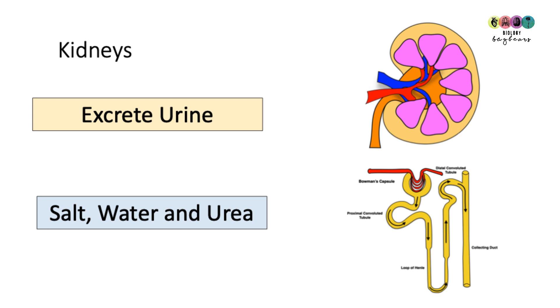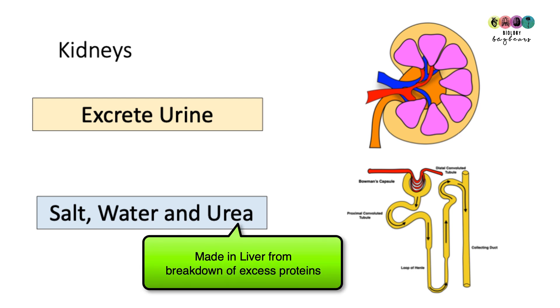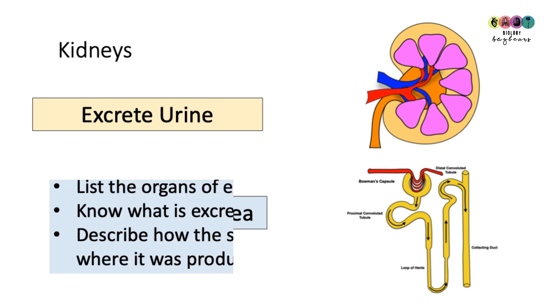The kidneys excrete urine. Urine is mostly water with salt and urea and other substances — but mainly salt, water, and urea.